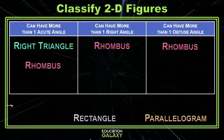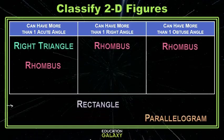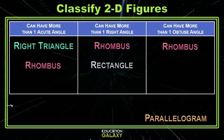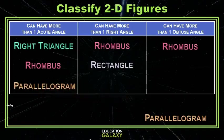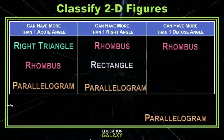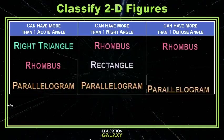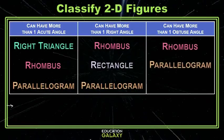A rectangle has four right angles. So by definition, it has more than one right angle, but that's the only type of angle it can have. And then a parallelogram can be many different things like a rhombus. It can have more than one acute angle, it can have more than one right angle, and it can have more than one obtuse angle.